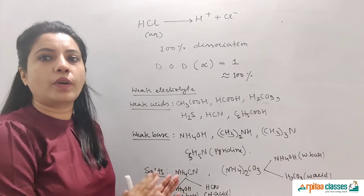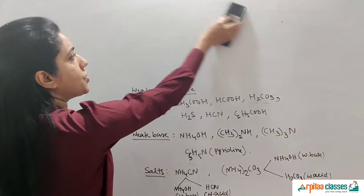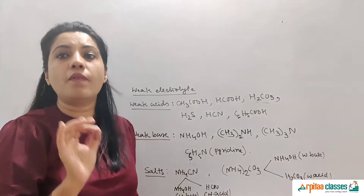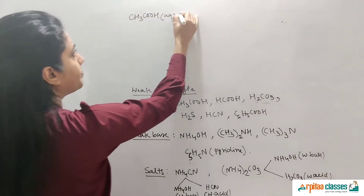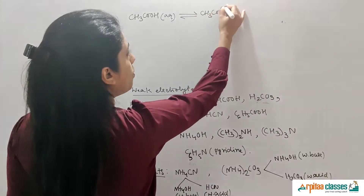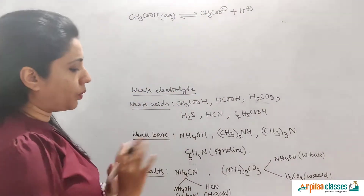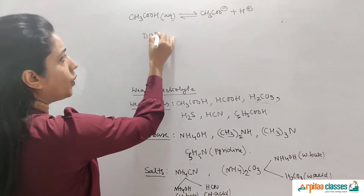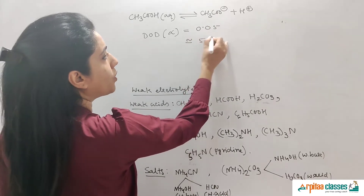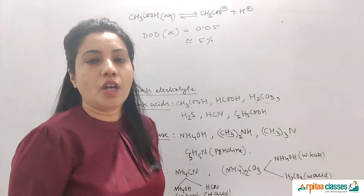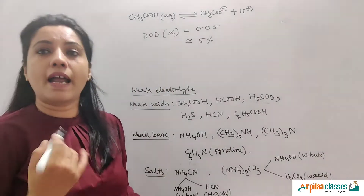In this chapter we are going to talk about only weak electrolytes because those reactions establish equilibrium. The degree of dissociation of weak electrolytes is only up to 5%, not more. For example, CH3COOH in aqueous solution dissociates to give CH3COO⁻ and H⁺ — this is a reversible reaction occurring in both directions. If you calculate the degree of dissociation (DOD), it is not more than 0.05 or 5%. For such electrolytes, equilibrium is established.